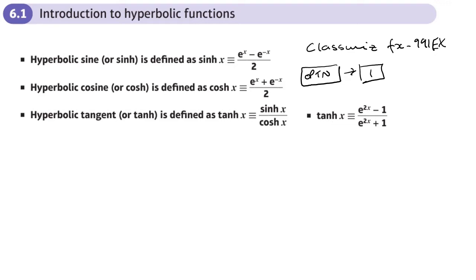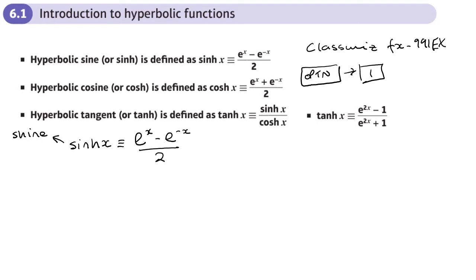Let's start with the hyperbolic sine function, which we write as sinh — pronounced 'shine'. That is defined in terms of e to the x. They are defined using e to the x. So sinh(x) is e to the x minus e to the minus x, over 2.